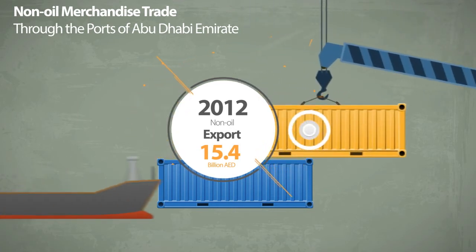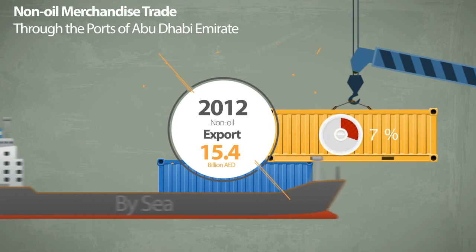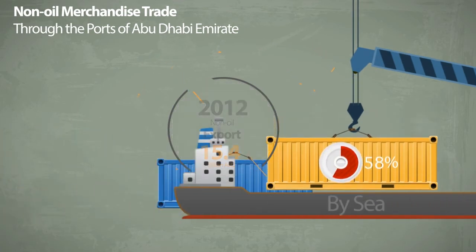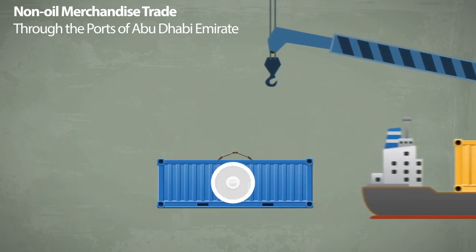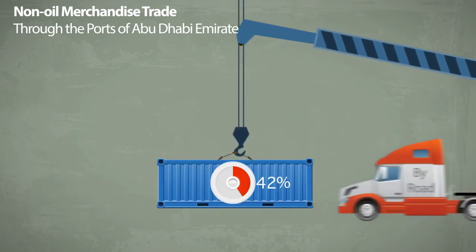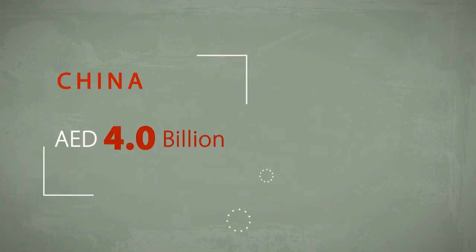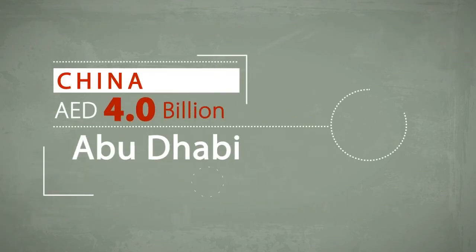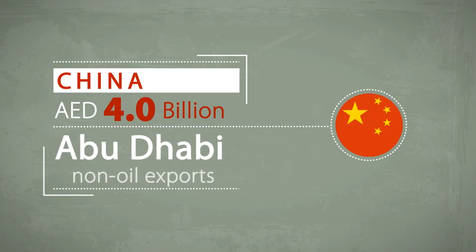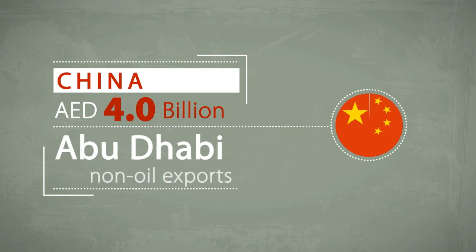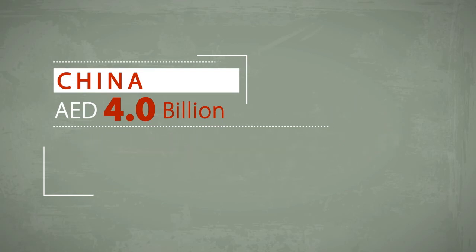Over half — 58% — of this trade was transported by sea and around 42% by road and air. China was the top destination for Abu Dhabi's non-oil exports, with 4 billion dirhams of goods destined for this trading partner.